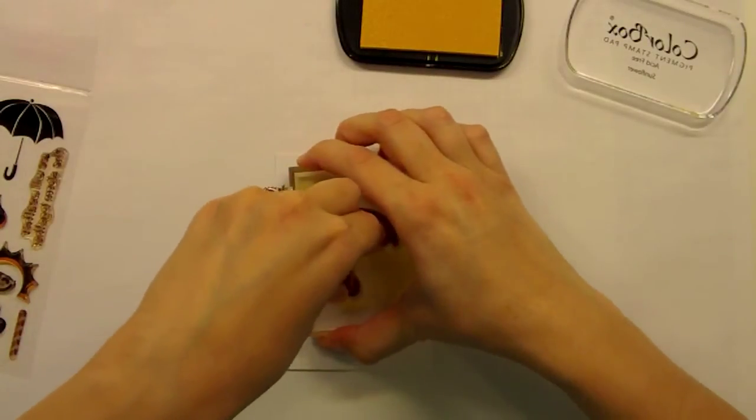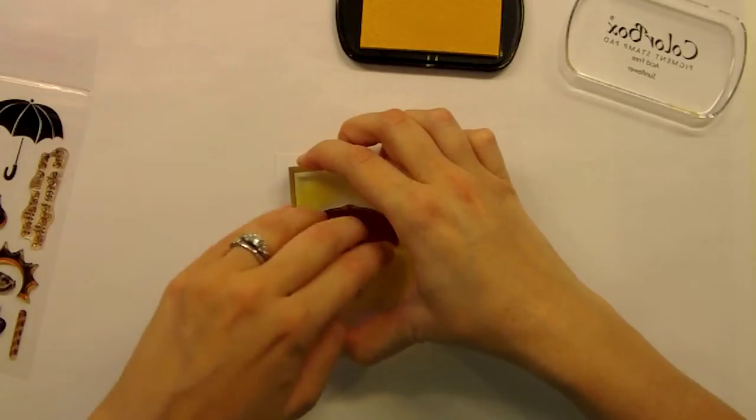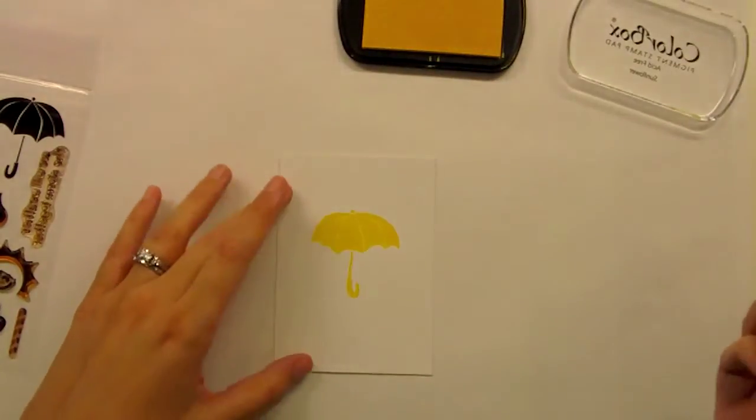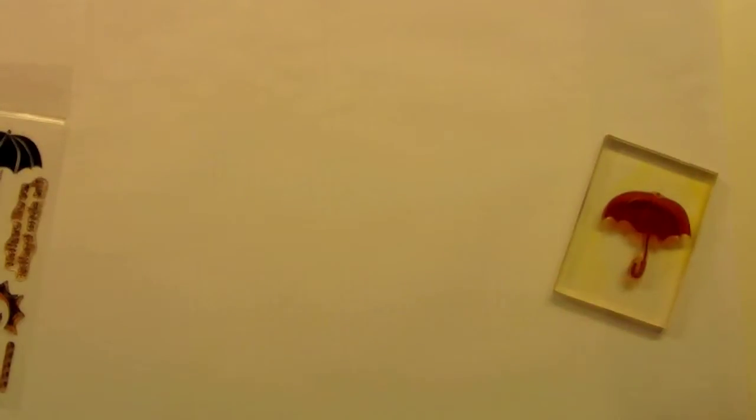I'm pushing down a little extra hard because it is a silhouette or solid image stamp. I think that kind of helps make sure that you get even coverage, like a background stamp kind of idea. And so there's my little panel.